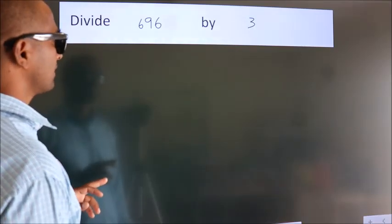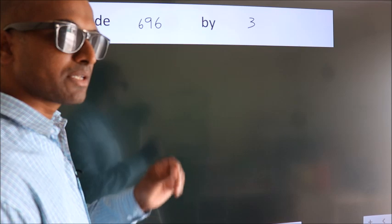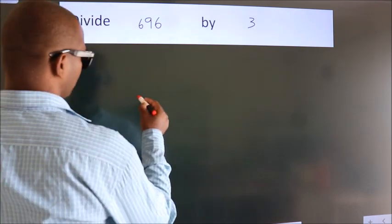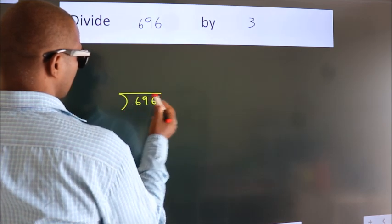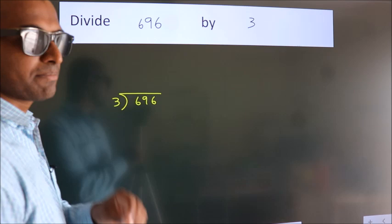Divide 696 by 3. To do this division, we should frame it in this way. 696 here, 3 here. This is your step 1.